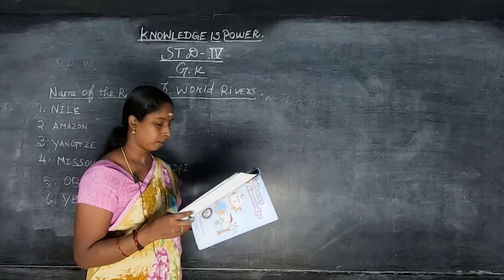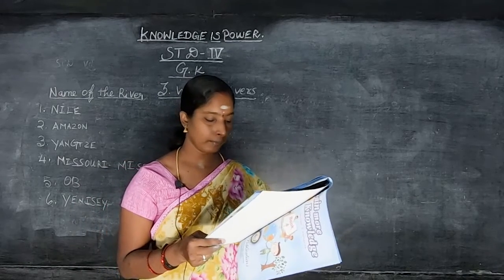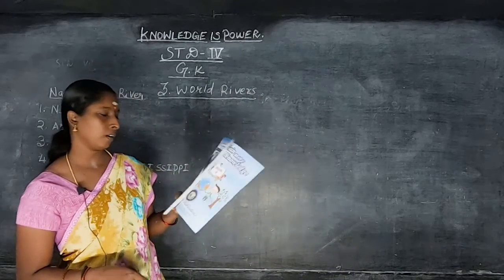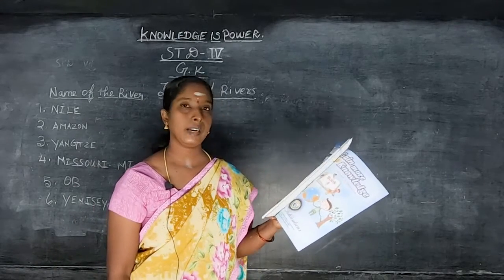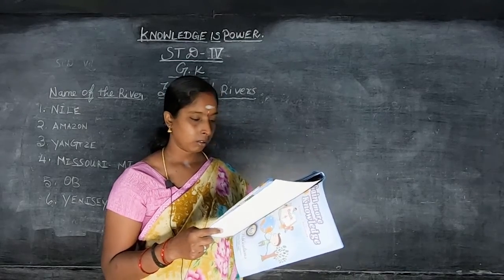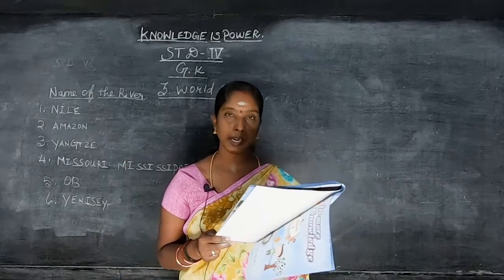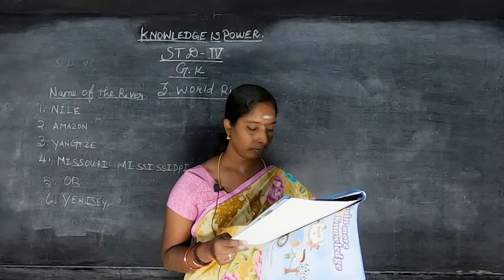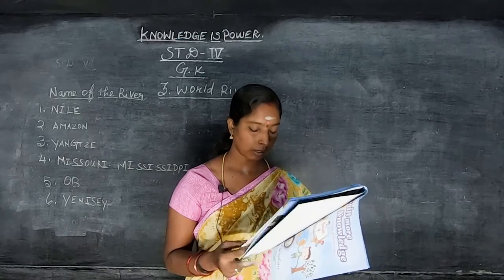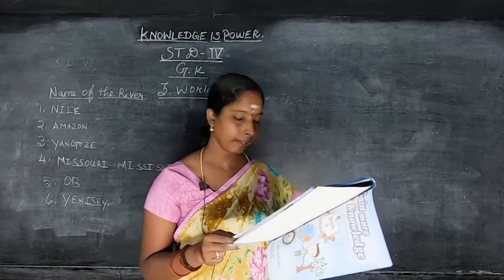Seventh one: Huang He. Continent: China. Length: 5,464 kilometers. Eighth one: Congo. Continent: Africa. Length: 4,667 kilometers. Ninth one: Parana. Continent: South America. Length: 4,500 kilometers. Tenth one: Mekong. Continent: Asia. Length: 4,425 kilometers.